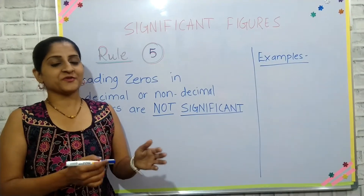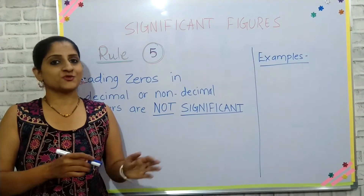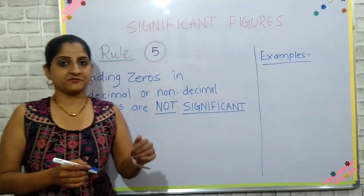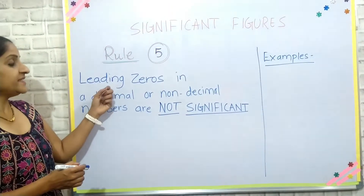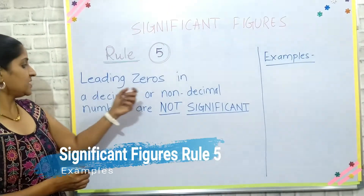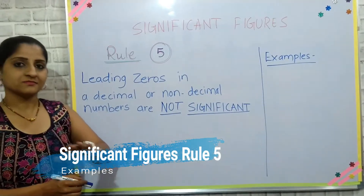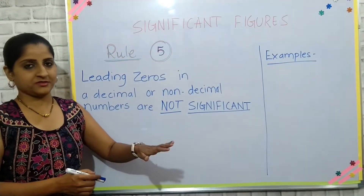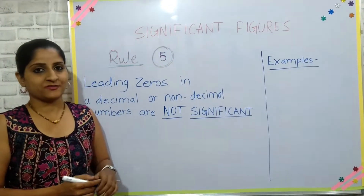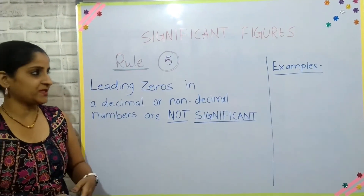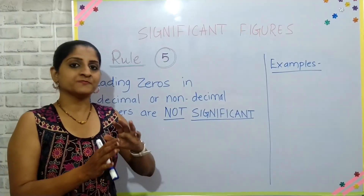In this video we are going to learn the fifth and last rule of identifying significant figures. The fifth rule says leading zeros in a decimal or non-decimal number are not significant — we do not have to count them as significant figures. Let's study that with an example.